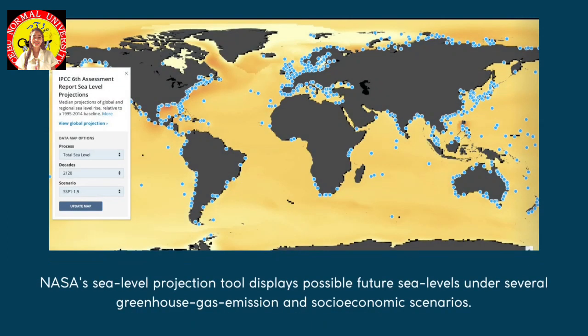NASA's sea level projections display possible future sea levels under several greenhouse gas emission and socio-economic scenarios: a future with low emissions keeping global warming to 1.5 degrees; a business-as-usual trajectory with emissions continuing on their current course and predicted global warming of 2 to 4 degrees above pre-industrial levels by end of century; and an accelerated emissions scenario with temperatures well above 4 degrees. A high emissions projection would lead to warming of over 4 degrees, enough for Greenland's ice sheet to melt completely, causing sea levels to rise globally by more than 200 cm.